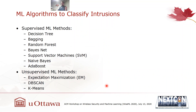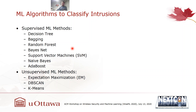Our machine learning algorithms include supervised and unsupervised methods. The supervised methods are tree-based methods as well as support vector machines, Bayes network, and naive Bayes. These methods are compared in terms of their detection performance, and we will see interesting results shortly. After that, I'll also discuss how the unsupervised methods perform relative to each other.